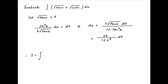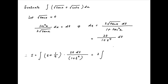Therefore, if we denote the given integral by i, i is equal to the integral of square root of tan x plus square root of cot x, which can be written as t plus 1 upon t, and dx is 2 times t times dt divided by 1 plus t to the power 4. This is equal to 2 times the integral of 1 plus t squared divided by t, times t upon 1 plus t to the power 4, times dt.